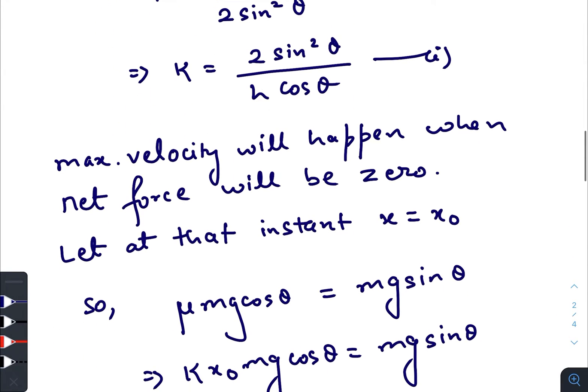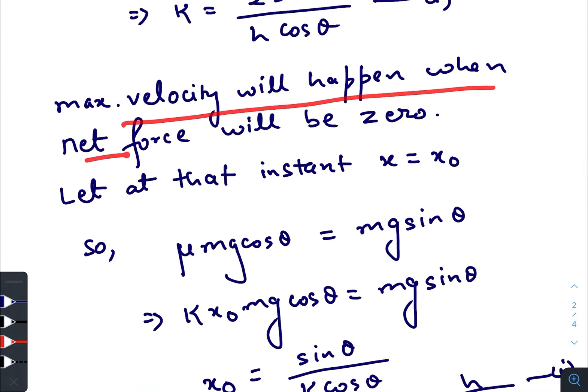So after that I have also written that maximum velocity will happen when the net force will be zero, that means the force due to friction will balance the force due to gravity.